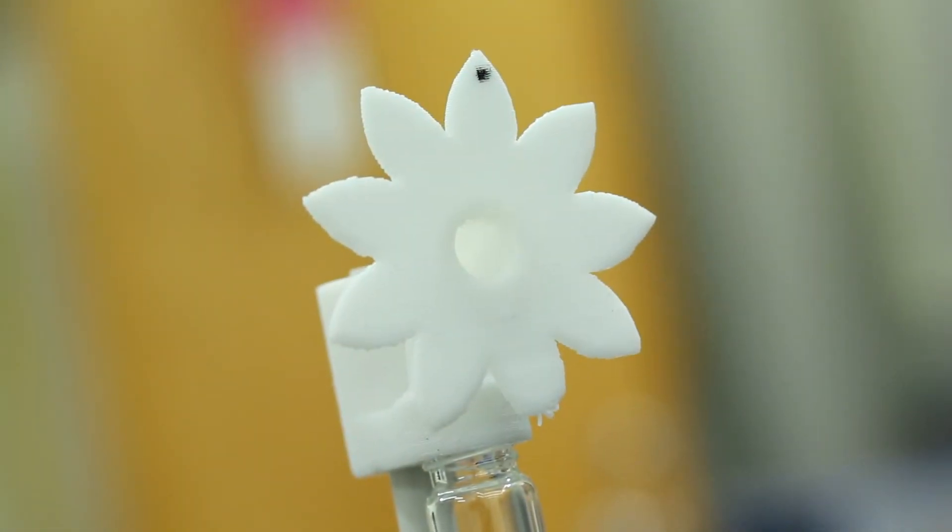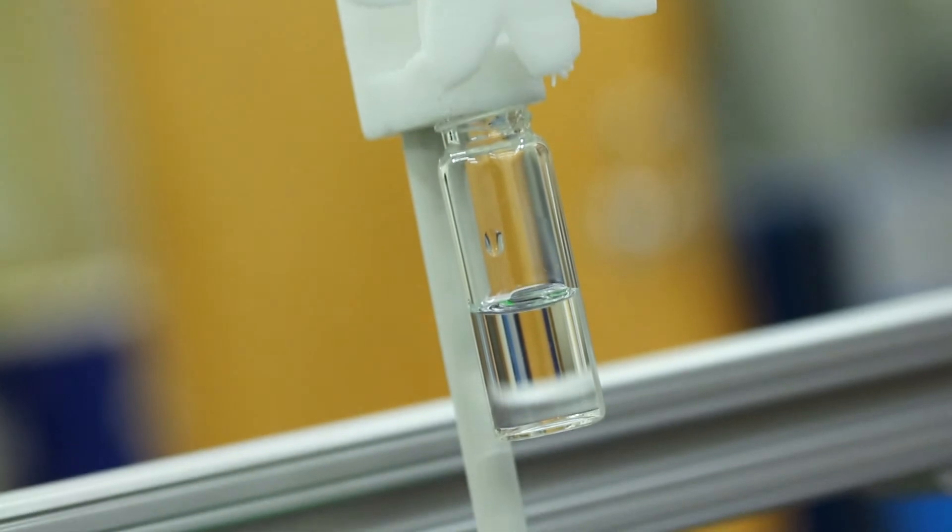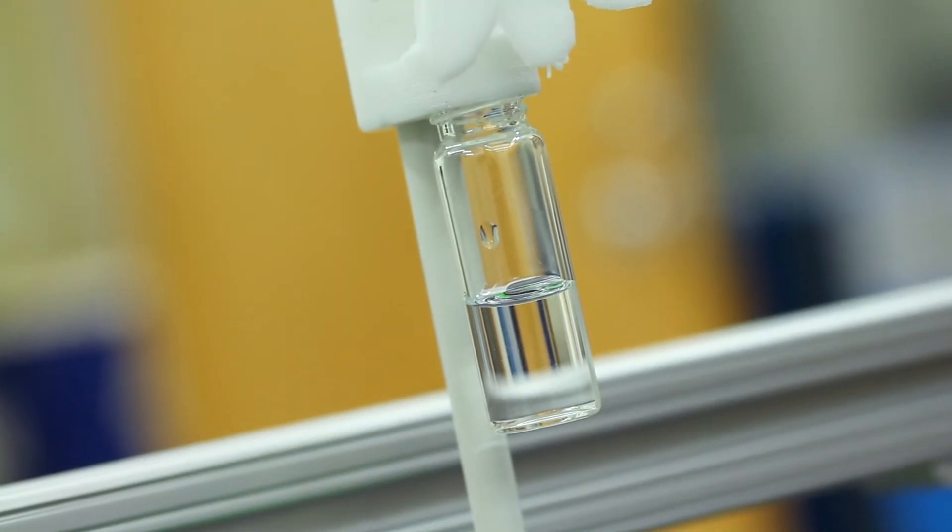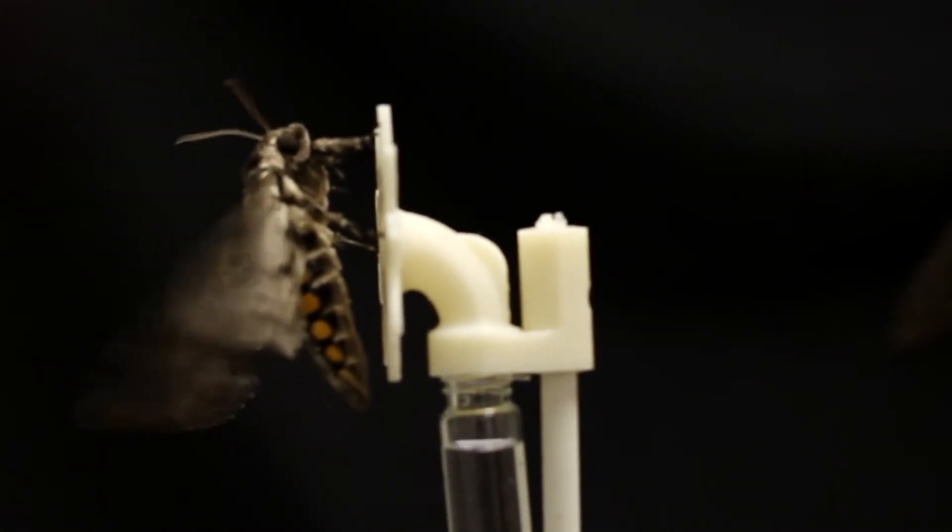So what we did is we made robotic 3D printed flowers. We used a 3D printer, we printed out flowers, filled them with nectar. We needed to supply a large amount of nectar so that the moth would feed from them for a while so we could characterize their flight performance over a period of time.